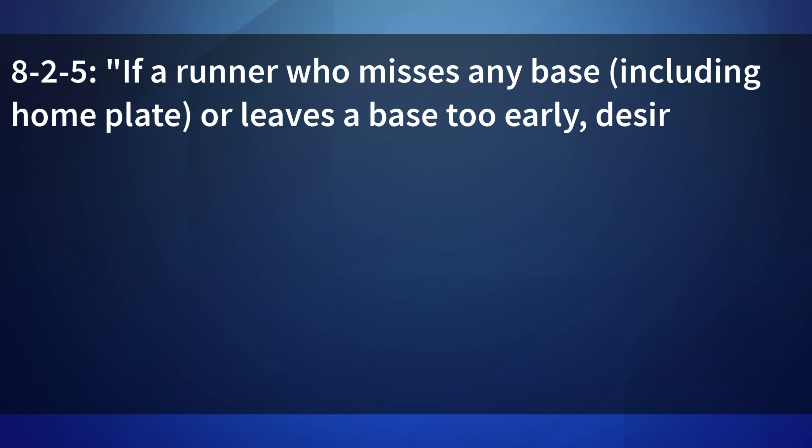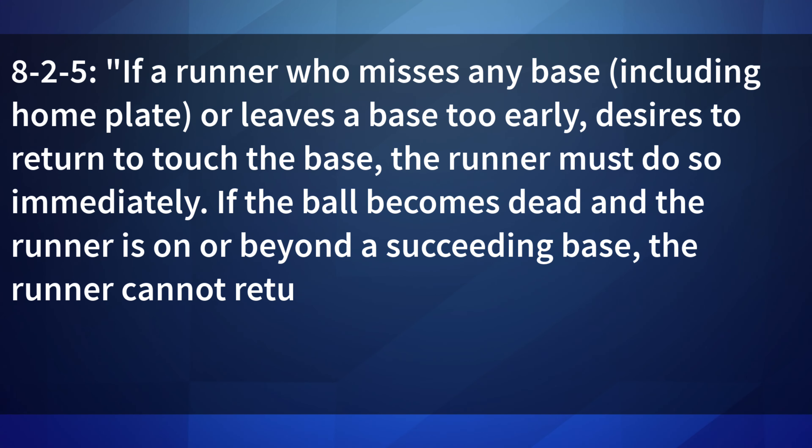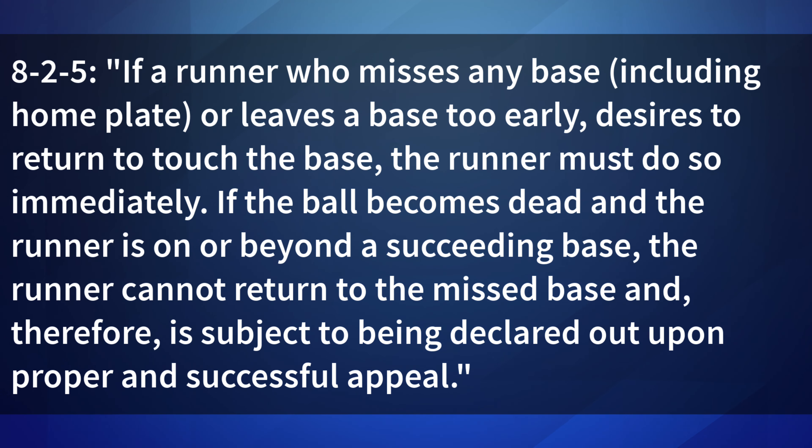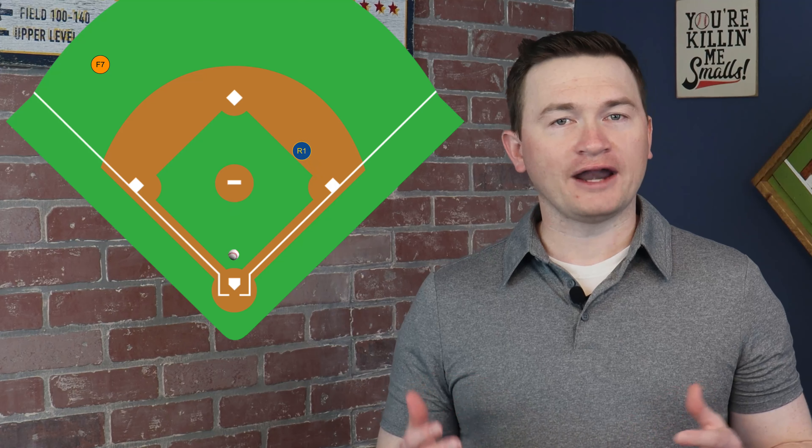Article 5: if a runner who misses any base, including home plate, or leaves a base too early, desires to return to touch the base, the runner must do so immediately. If the ball becomes dead and the runner is on or beyond a succeeding base, the runner cannot return to the missed base and is subject to being declared out upon proper and successful appeal. For example, with a runner on first and one out, on a hit to deep left field, F7 catches the ball in foul territory and leaves the field of play. R1 still has to retouch first, and this ball carried out of play will result in a one-base award. If R1 is between first and second, they go back and retouch first, then will be awarded second. But if R1 is beyond second base when the ball becomes dead, by rule he cannot go back and tag up, and any appeal of R1 not retouching will be upheld.